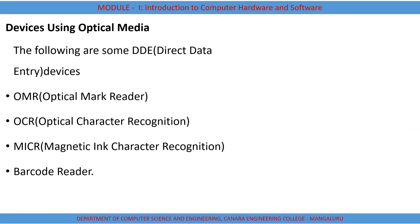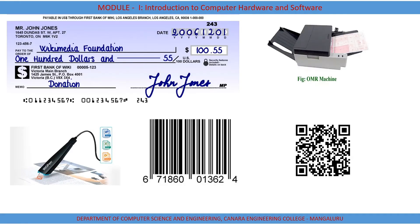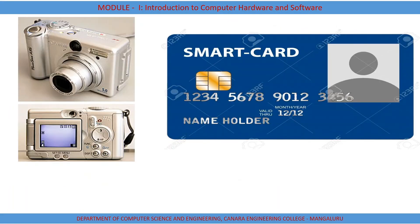There are some other input devices that use optical media, such as Optical Mark Reader (OMR), Optical Character Recognition (OCR), Magnetic Ink Character Recognition (MICR), and barcode reader. You can see a barcode reader in the picture, and an OMR machine is normally used for evaluating papers. Smart cards and digital cameras are also some important input devices.